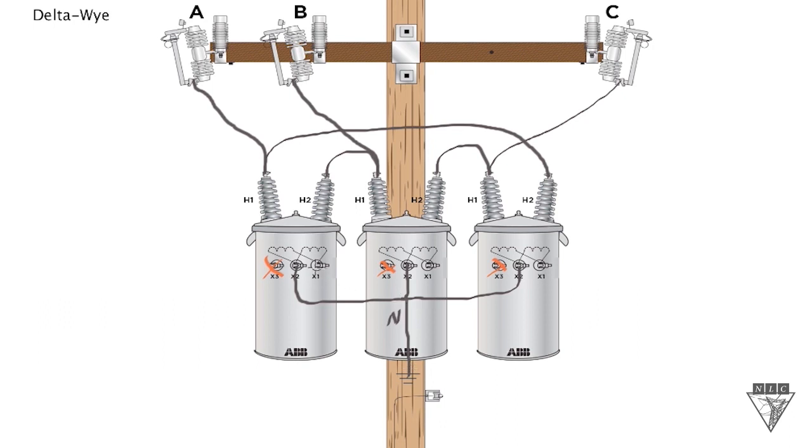For the hot legs, you're just going to come off the X1, and each transformer is going to have a leg running off of it. Each will have one hot leg. We'll put an H for hot leg. This is where your voltage is going to come out.